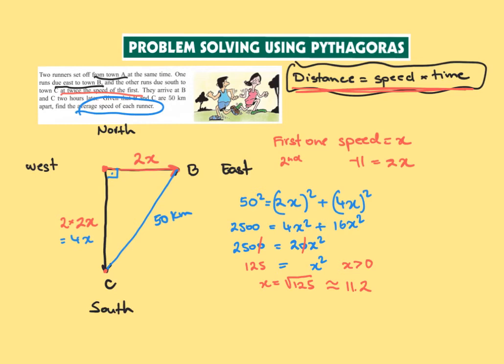Now please remember that this is the speed, 11.2. So 11.2 is for the runner running from A to B.